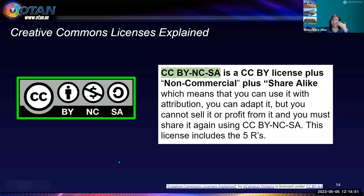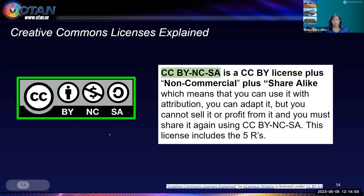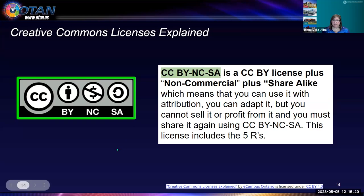CC BY-NCSA is a CC BY license plus Non-Commercial plus Share Alike. This means you can use it with attribution, you can adapt it, but you cannot sell it or profit from it, and you must share it again using CC BY-NCSA. When you see the SA, your new revisions have to include the exact same license the original author had. This license also includes the five R's and is considered a true OER.